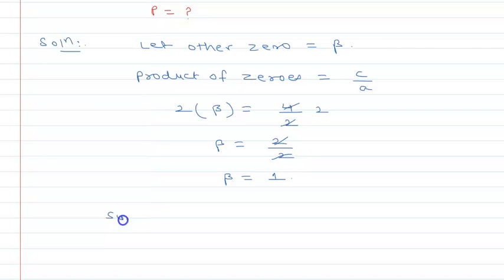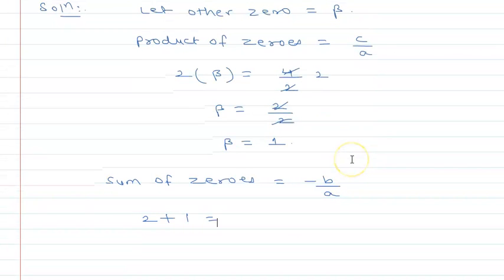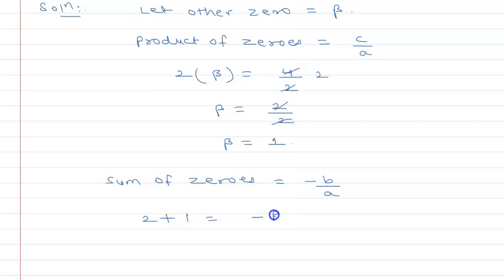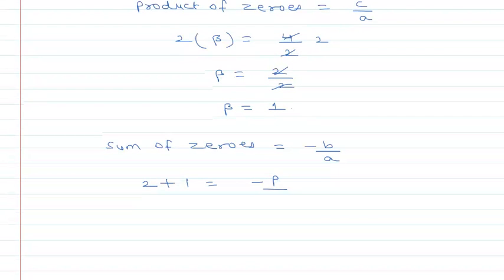So sum of zeros is equal to -b/a, where b is the coefficient of x and a is the coefficient of x². 2 + 1 will be equal to -p upon 2.